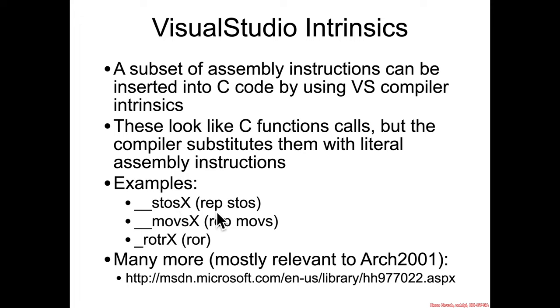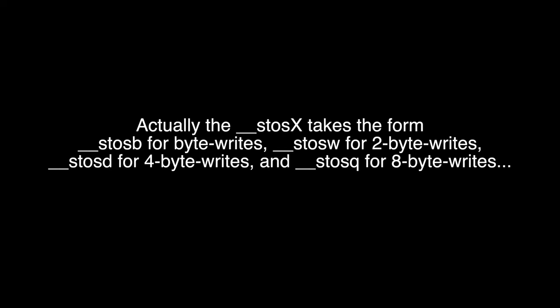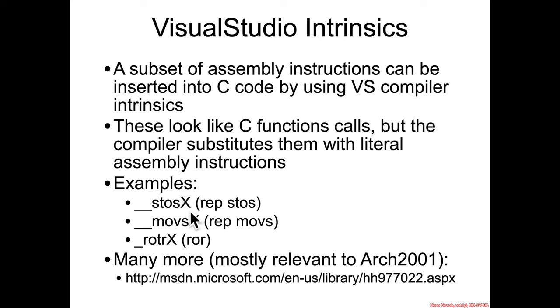So instead of needing to write the rep stos or rep moves assembly instruction, you can use __stos with a size like 32, and that will, behind the scenes, generate a rep stos. You give it some addresses of locations that you want to store to string.